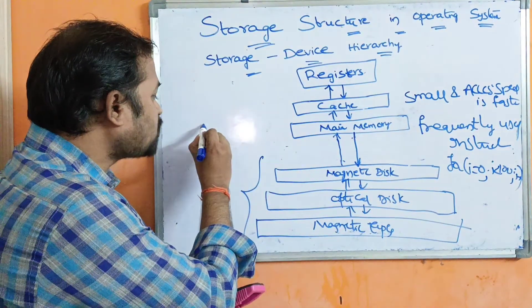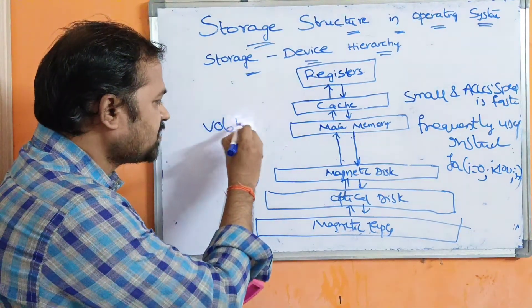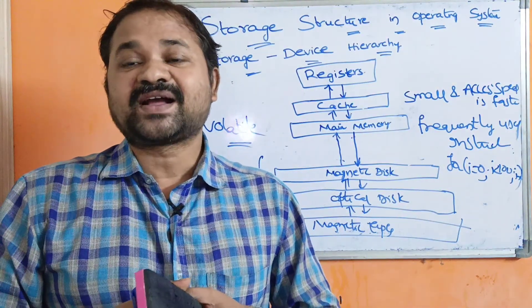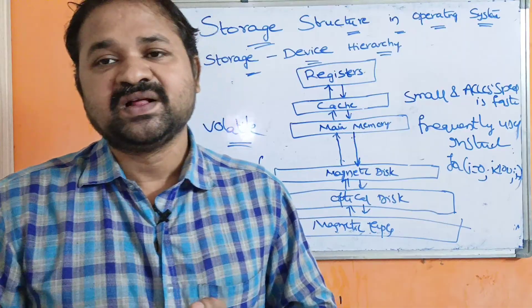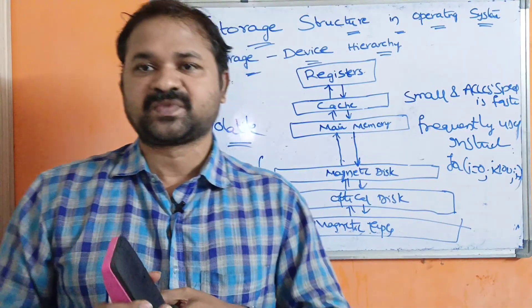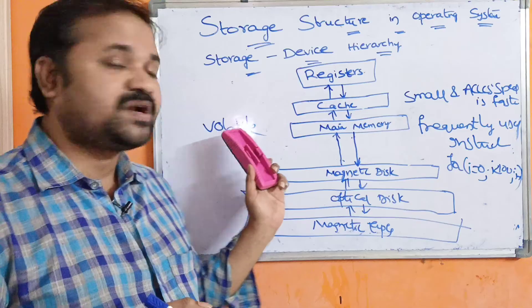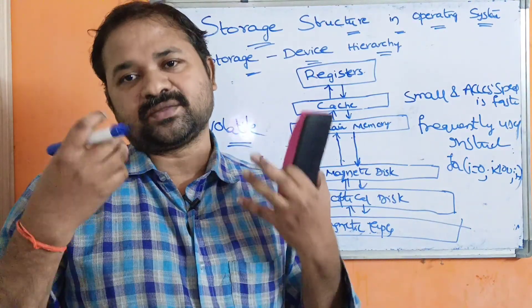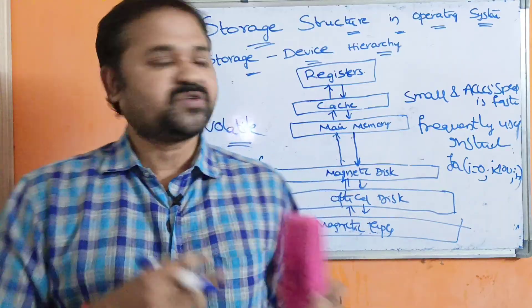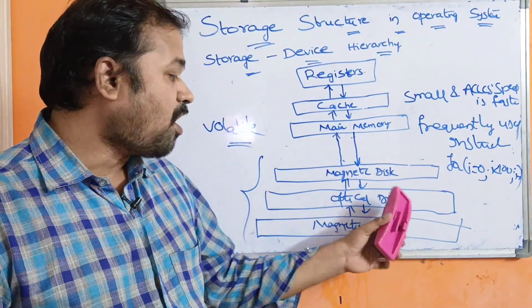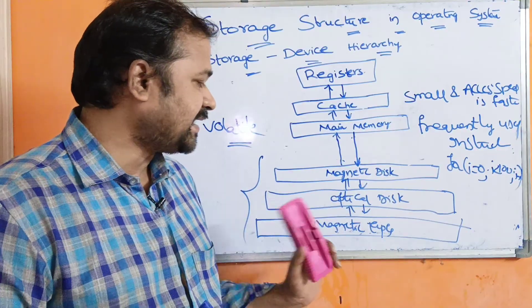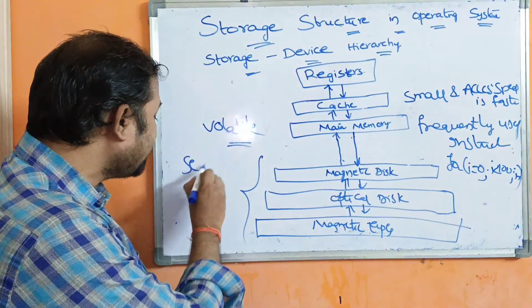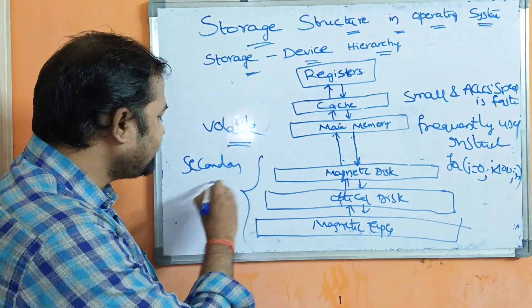Main memory is also called volatile memory, because whenever we switch off the computer, the contents of main memory will be lost. So we need a memory which stores information permanently. For that purpose, we use magnetic disk, optical disk, and magnetic tape. These are called secondary memory devices.